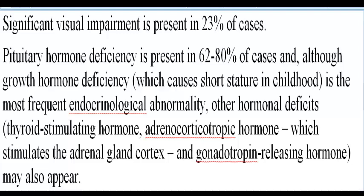Pituitary hormone deficiency is present in 62–80% of cases. Although growth hormone deficiency, which causes short stature in childhood, is the most frequent endocrinological abnormality, other hormonal deficits — including thyroid-stimulating hormone, adrenocorticotropic hormone (which stimulates the adrenal gland cortex), and gonadotropin-releasing hormone — may also appear.